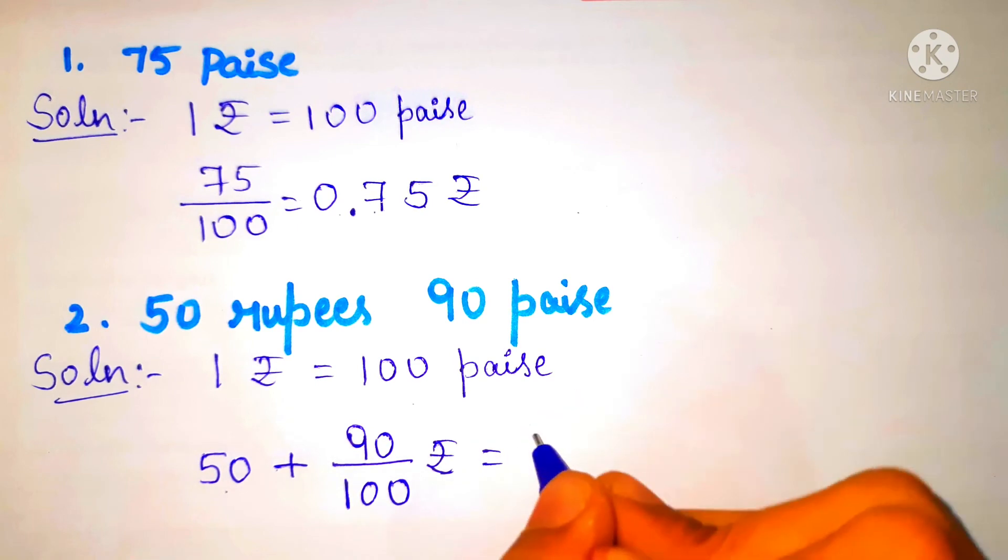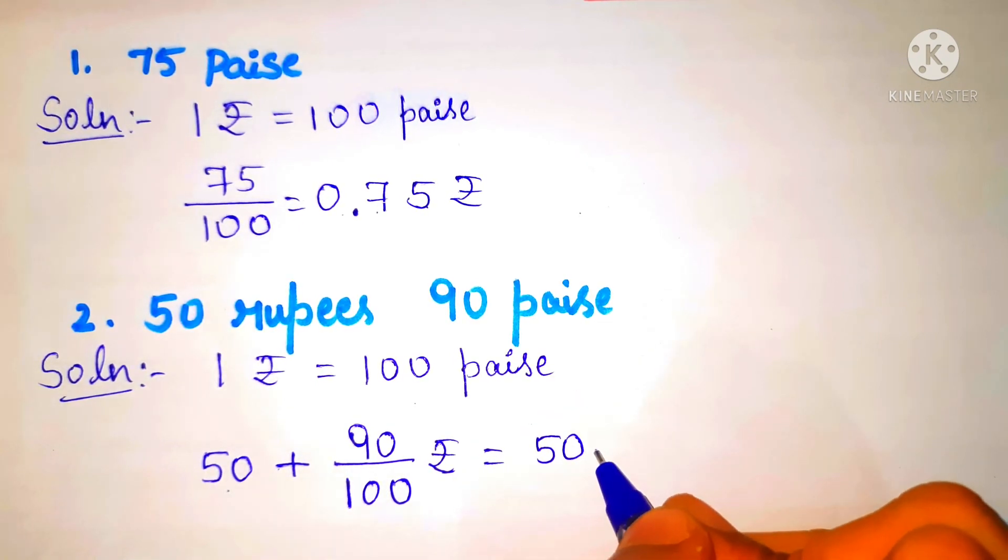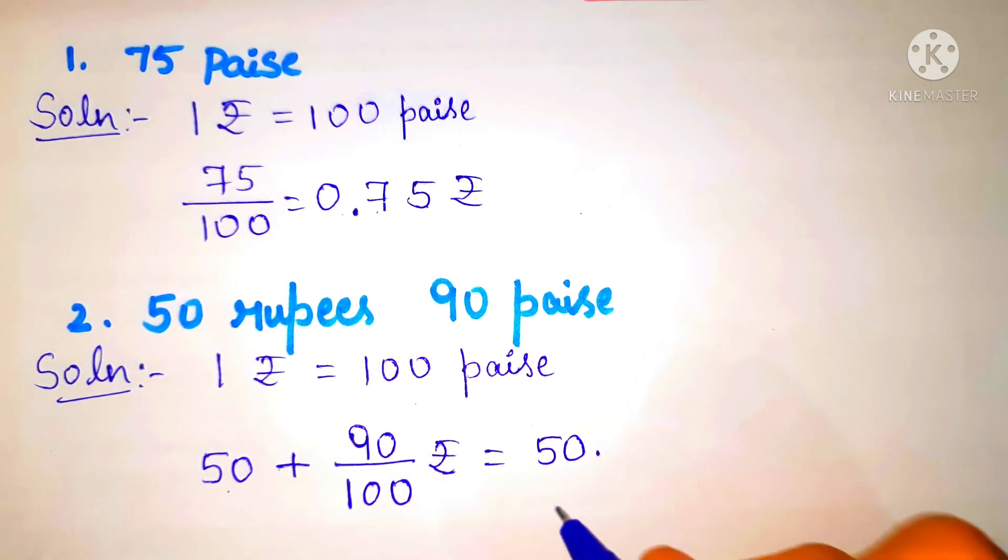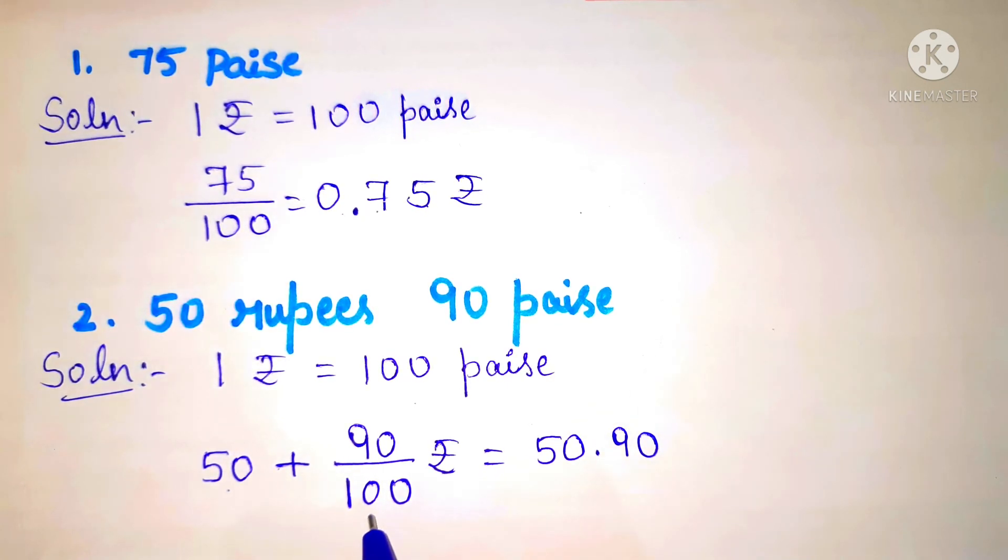First we write 50 here and put a decimal point. Then we write 90 paise after the point. In the number 100 we have two zeros.